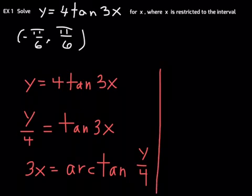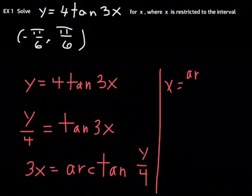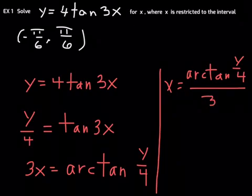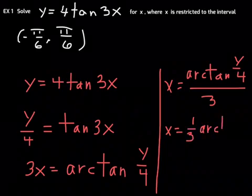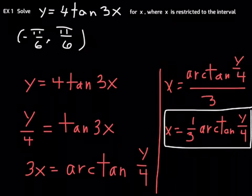And then we get that x is equal to arctan of y over 4, and then all over 3. You know what? That might look nicer, a little neater, if we wrote the dividing by 3 as just multiplying by 1 third. So, 1 third times arctan of y over 4 is our final answer. That's our final answer. Now, let me go ahead and box that. There. Our final answer for x.